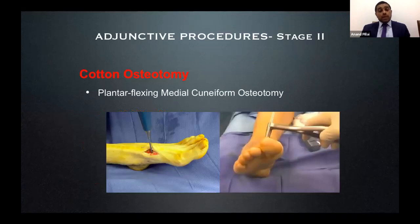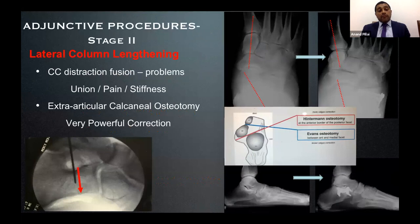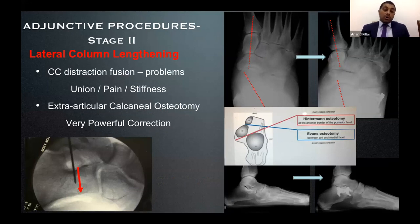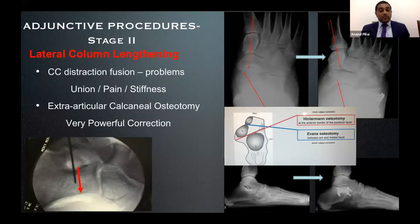A Cotton osteotomy is a plantar flexion osteotomy of the medial cuneiform to correct the forefoot. Lateral column lengthening is used when there is still significant forefoot abduction. An osteotomy is made between the anterior and middle facet or middle and posterior facet of the calcaneum and the column is lengthened through it. Alternatively, a distraction fusion of the calcaneocuboid joint can be done, though this has its own problems of pain and stiffness. It is a powerful tool reserved for individuals where hindfoot correction has been achieved but forefoot deformity persists.